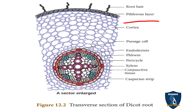The epidermis is made up of a single layer of parenchyma cells without intercellular spaces. Since this is a root, there is no stomata and cuticle. Root hairs are present. The function of the epidermis, as mentioned in the epidermal tissue system, is to give protection to the inner tissues. The function of root hairs is to absorb water and minerals from the soil.